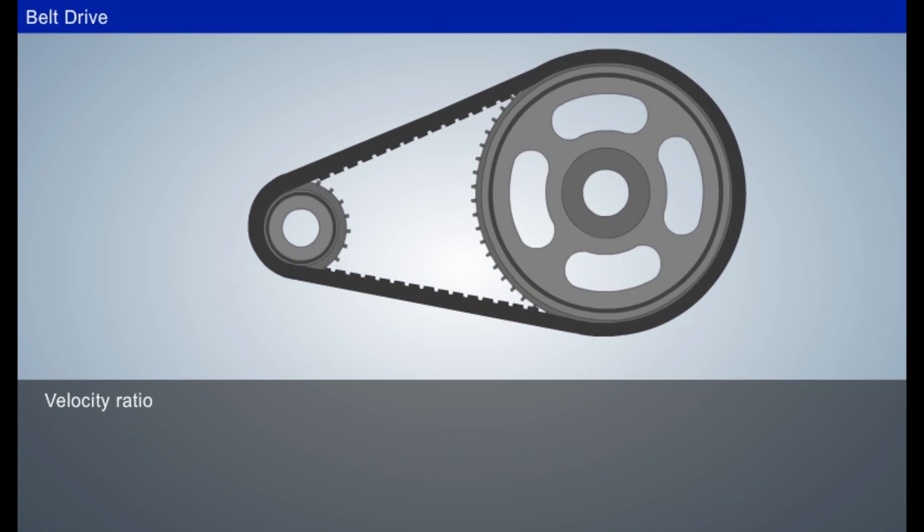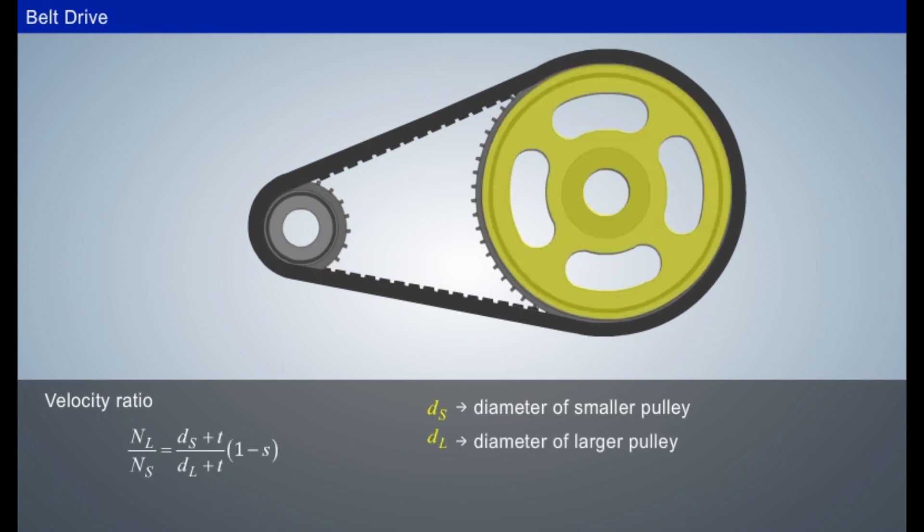Velocity ratio of belt drive is defined as the ratio of rotational speed of large pulley NL to the small pulley Ns, equal to (Ds + T) / (DL + T) × (1 - S), where Ds is the diameter of the smaller pulley, DL is the diameter of the larger pulley, S is the belt slip, and T is the belt thickness.